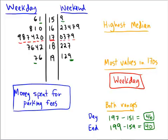Which group has the highest median? The median is the value in the middle. For the weekend, we cancel out high and low values from both ends until we reach the middle. After canceling out values, we end up halfway between 173 and 177. Halfway between 173 and 177 is 175, so the median on the weekend side is 175.